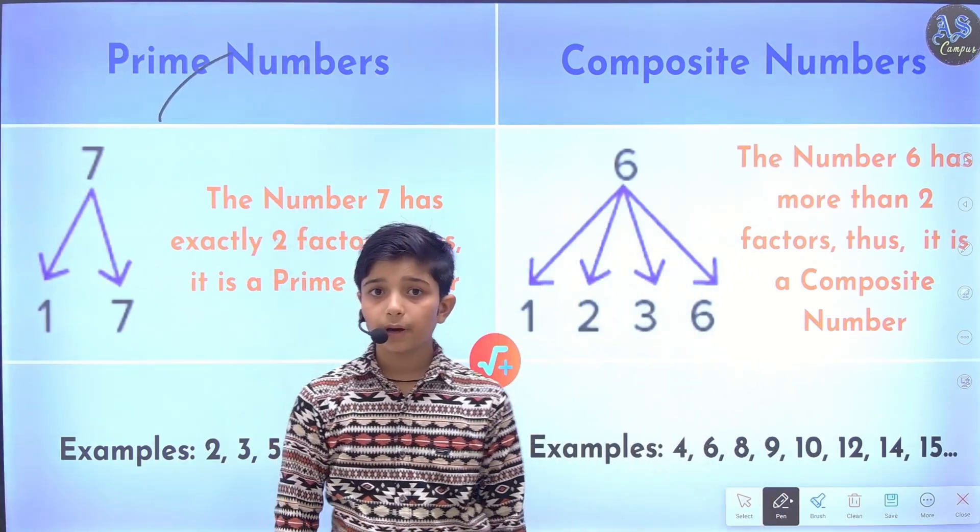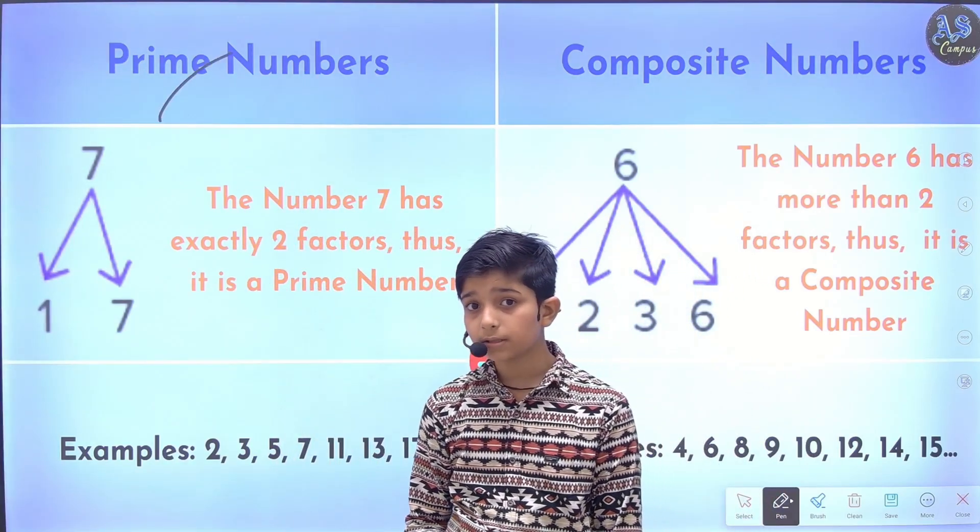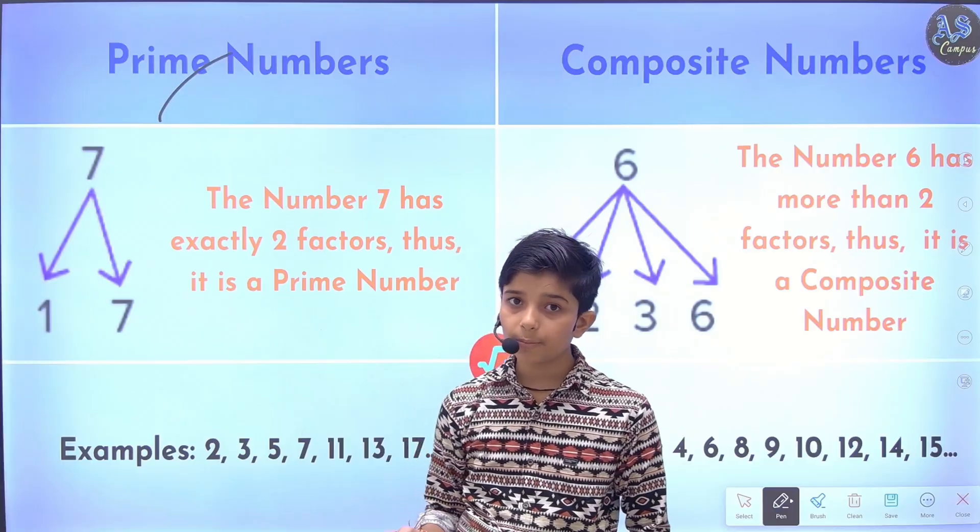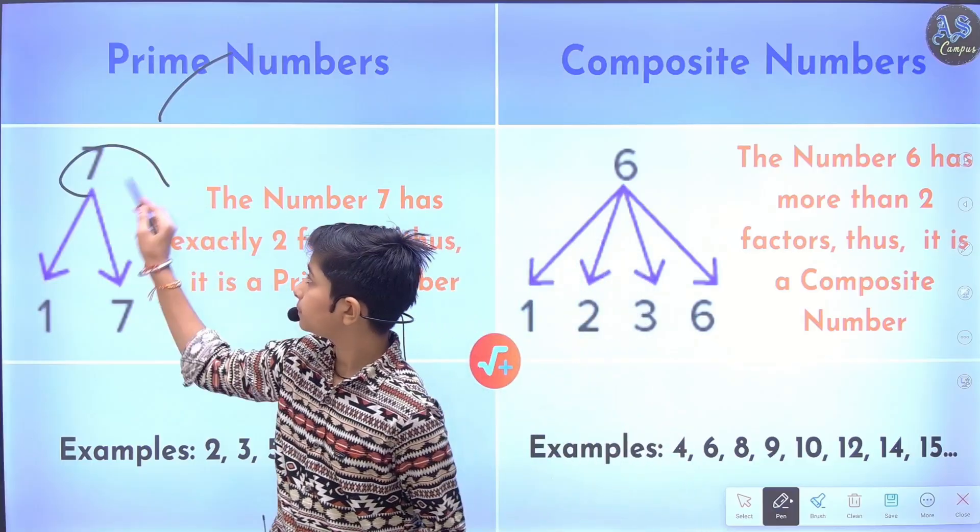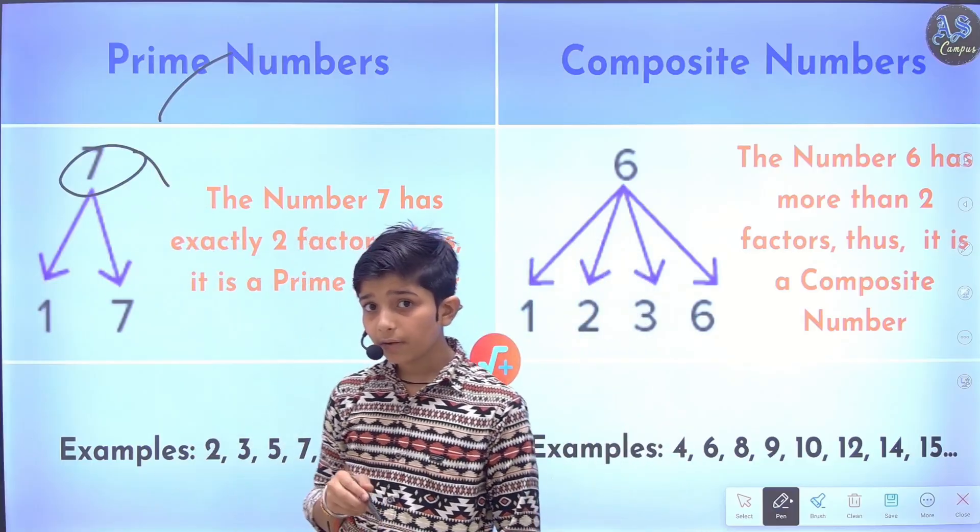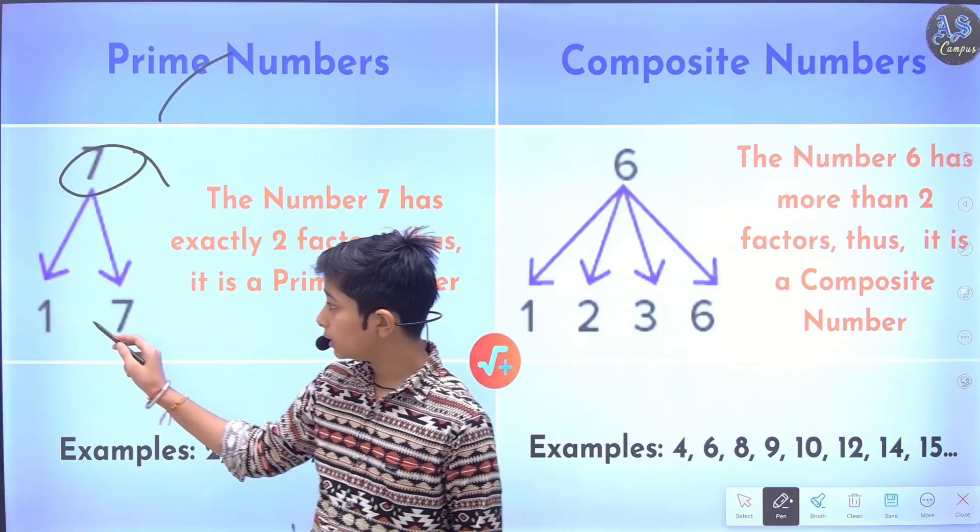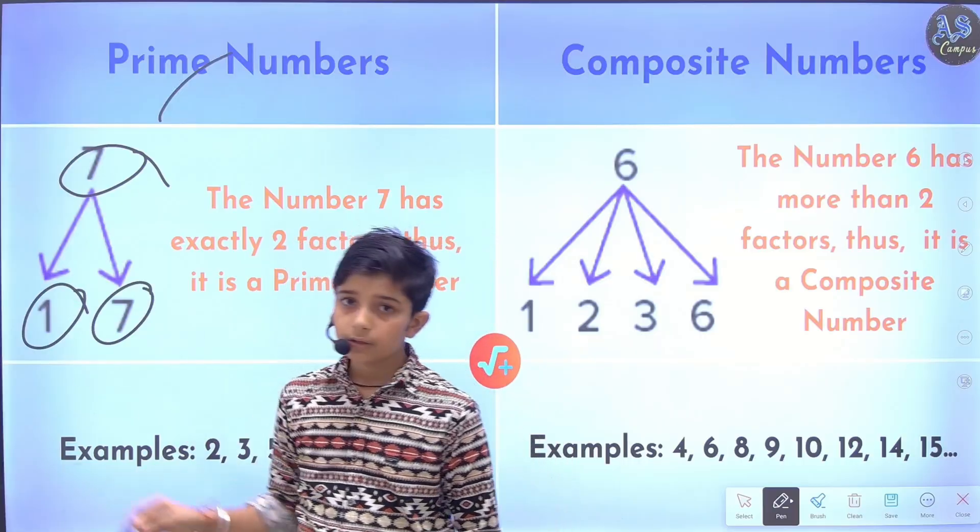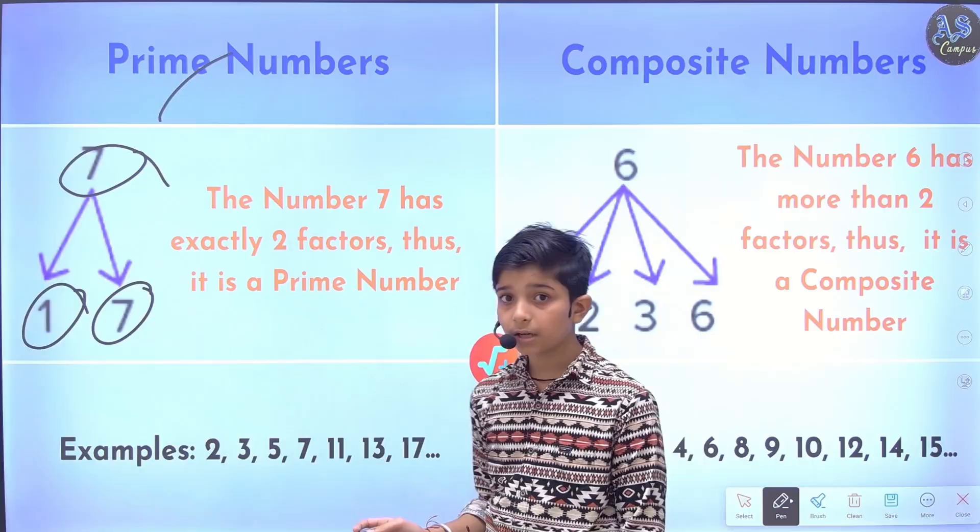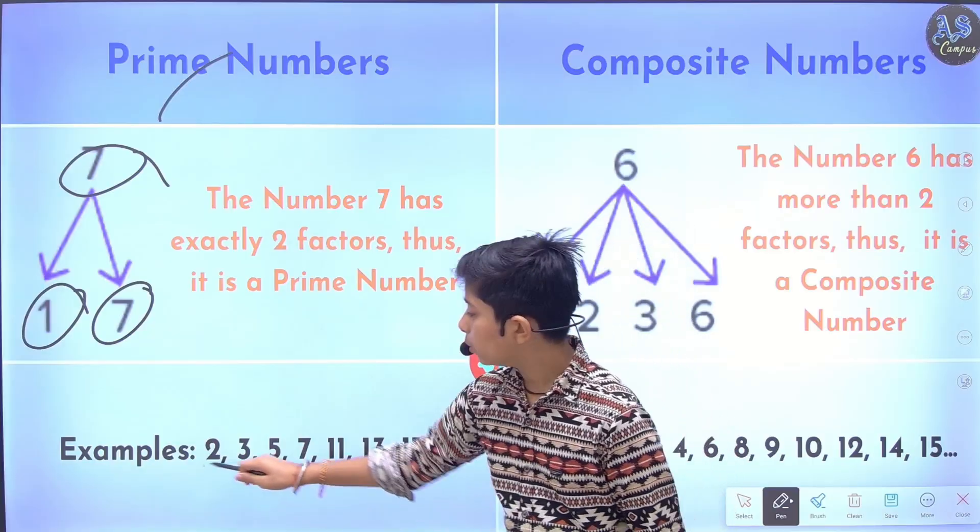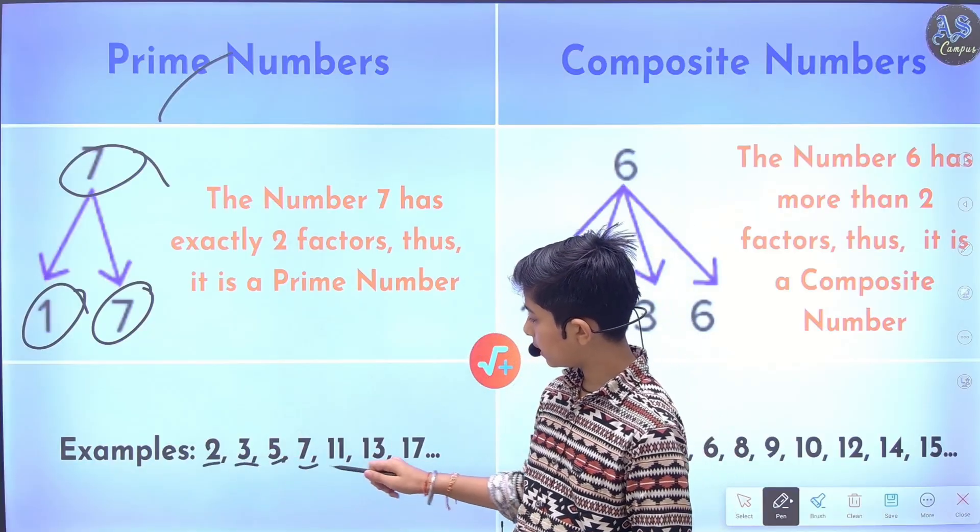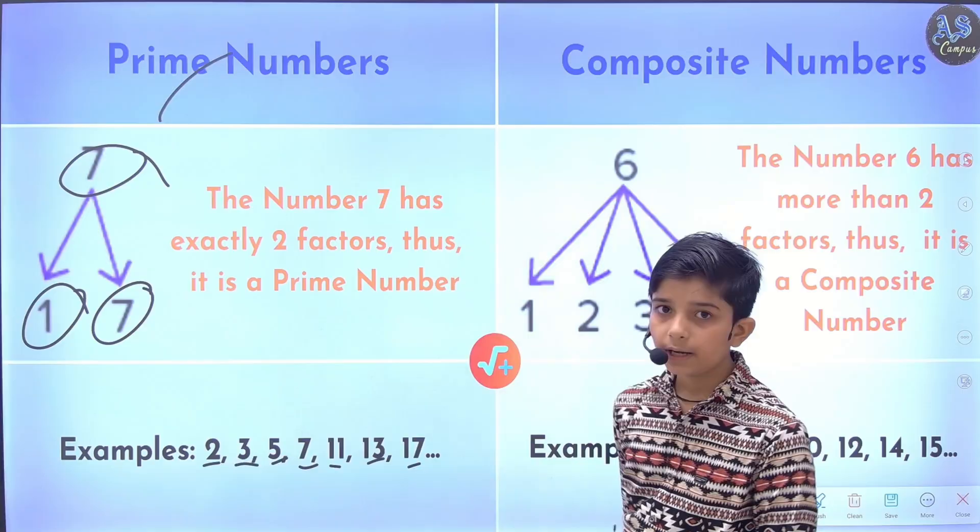Prime numbers: A number which has only two factors are called prime numbers. Example: 7. In this example 7 has two factors, so this is an example of prime number. There are many examples given below like 2, 3, 5, 7, 11, 13, 17, etc.